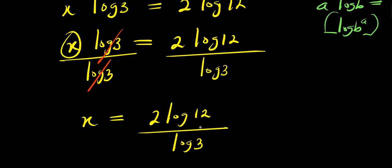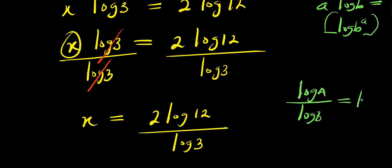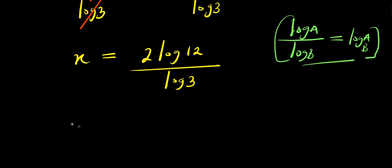Note that log 12 is log of 4 times 3. Also, remember that log a divided by log b equals log a to the base of b. Applying this identity, we simply have x equals 2 times log 12 to the base of 3. This is our answer.